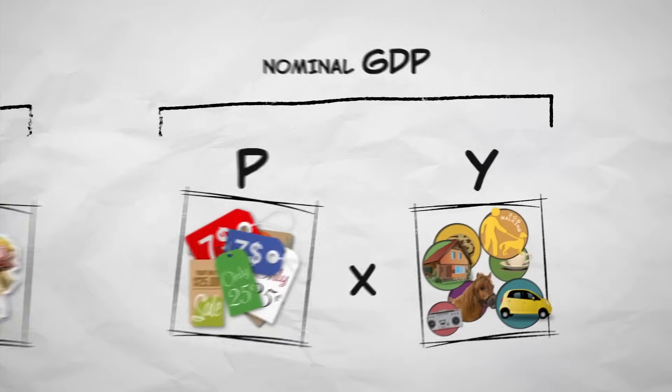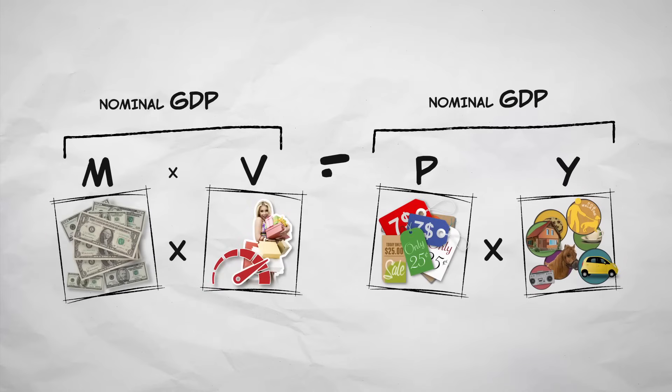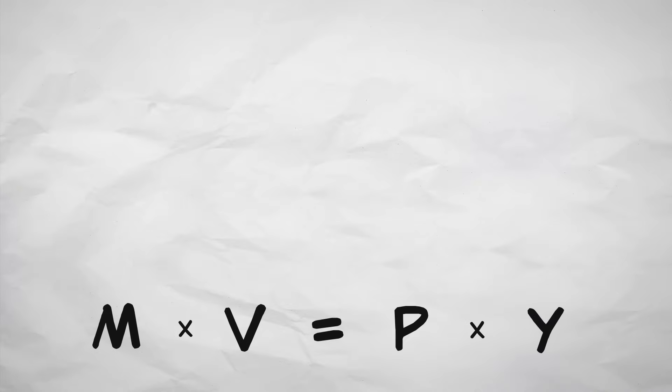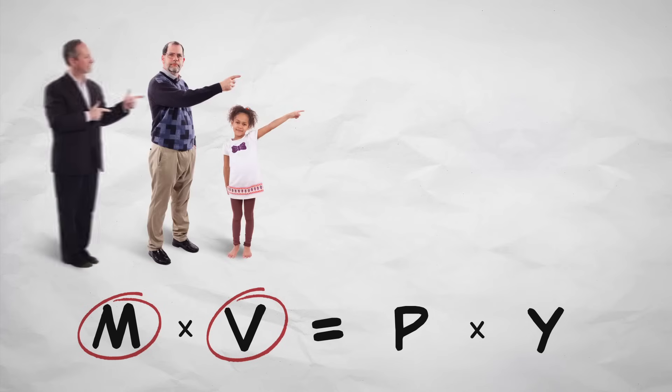Both sides represent nominal GDP in a different way. So, these are equal by definition, which is why we call this equation an identity. One way to think about it is that how much money we have in total times how many times the money is spent covers the actions of buyers.